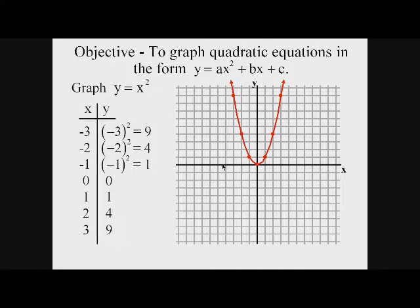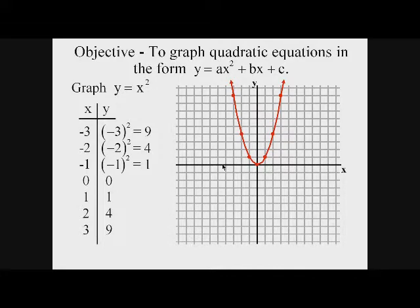This is what our function looks like — it's a parabola, sort of a cross between a U and a V shape. Parabolas appear in the real world quite often. Anytime you throw a projectile in the air, like a basketball or a golf ball, it follows a parabolic curve — usually opening down. This one opens up. You might also see a curve like this between two telephone poles or a sagging clothesline. One of the most critical points on the parabola is the vertex.